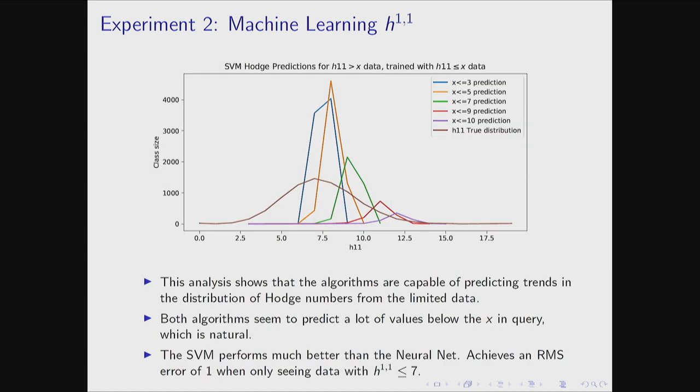The main takeaway from this analysis is that these algorithms are capable of predicting trends in the distribution from very limited data, which is impressive. Both algorithms seem to predict a lot of values below the training limit, which is natural. The SVM performs much better than the neural net and achieves a root mean square error of one when being trained with data only up to H11 ≤ 7, whereas the full range goes all the way up to 19.